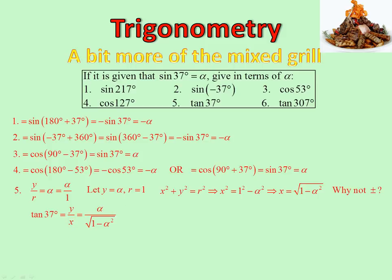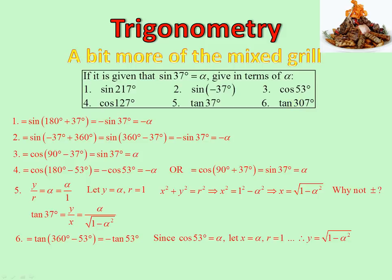Tan of 307: 360 minus 53 gives negative tan 53. We know cos 53 equals alpha, so we use that to find y with the same triangle approach. Therefore negative tan 53 equals negative of x over r, and there we have tan of 307.